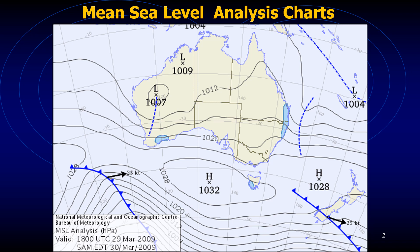Weather patterns are shown in the form of isobars — lines joining places of equal pressure — along with surface winds, frontal systems, and low and high pressure positions, where L stands for low pressure and H stands for high pressure. You also have cold fronts shown as blue lines with triangles, indicating direction of movement, and troughs denoted by a dashed line.